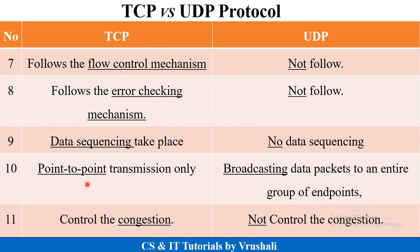TCP is a point-to-point transmission only, meaning it sends data to the exact receiver. UDP, however, broadcasts data across the entire network. TCP controls congestion according to network traffic when sending data, but UDP does not control congestion, which is why data can be lost.